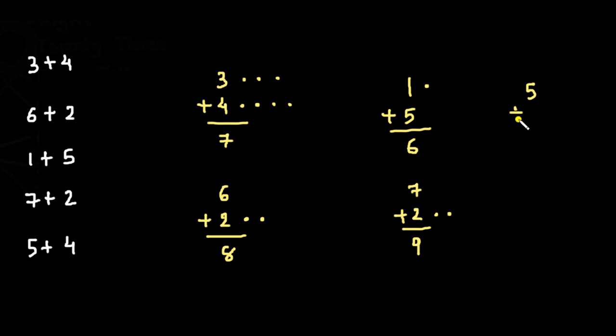We have 5 plus 4. You can do it this way: 1, 2, 3, 4, 5—we have 5 dots. Now add 4 more: 1, 2, 3, 4. Now count them together: 1, 2, 3, 4, 5, 6, 7, 8, 9. The answer is 9. Or just start to count after 5, up to 4 numbers: 5, 6, 7, 8, 9. Answer is 9.